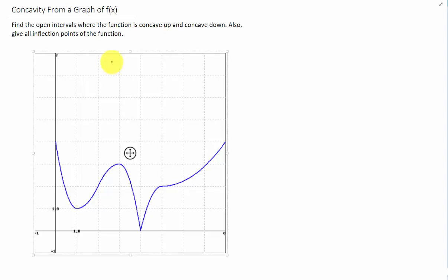We're going to determine from this graph open intervals where the function is concave up and concave down. Now a function is concave up and decreasing if it has a shape that looks something like this, and a function is concave up and increasing if it has a shape something like that.